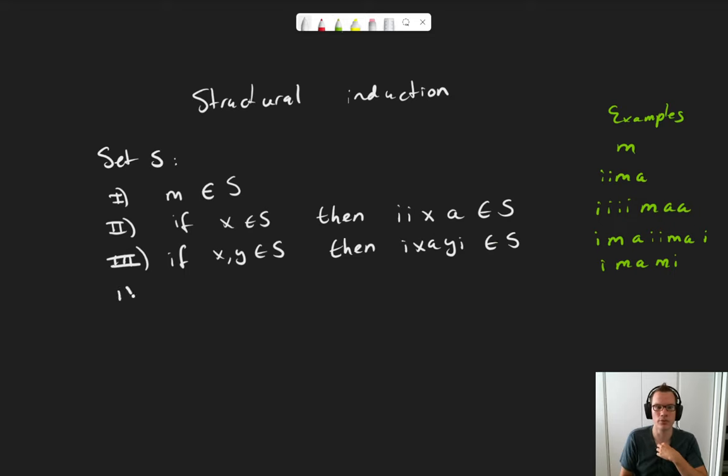And finally, the fourth rule. Nothing else is in S. This rule is important because without it, S could also contain you and me, or even this video, or maybe the machine that you're watching this video on. We don't want any of that. We want it to be just words and just words that are constructed using these rules.